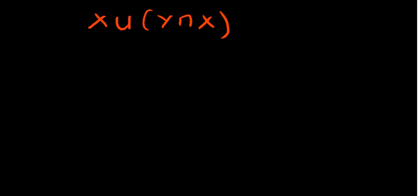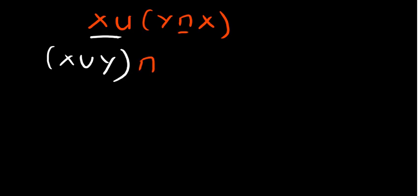For X union Y intersection X, this takes us to the distributive law, which requires us to distribute — essentially multiplying this by that. So we get X union Y, with that sign in between, and then X being intersected with X. This is the distributive law we talked about.